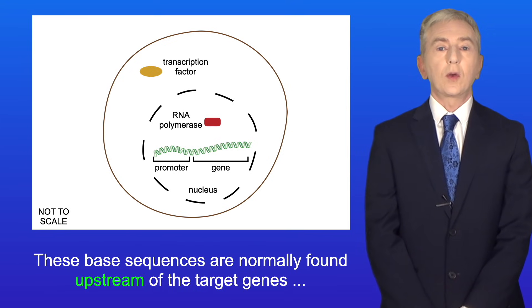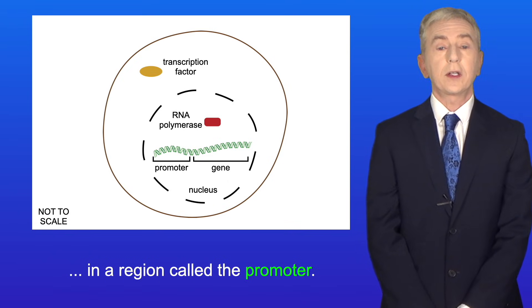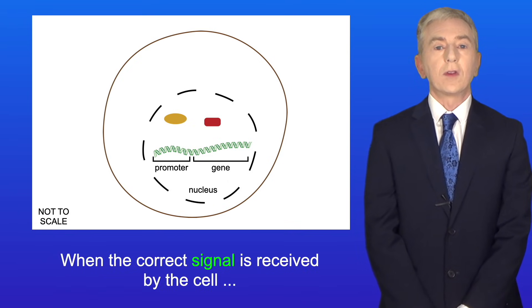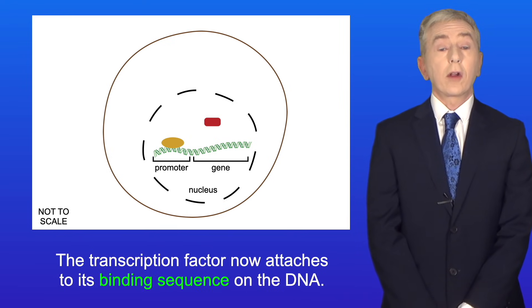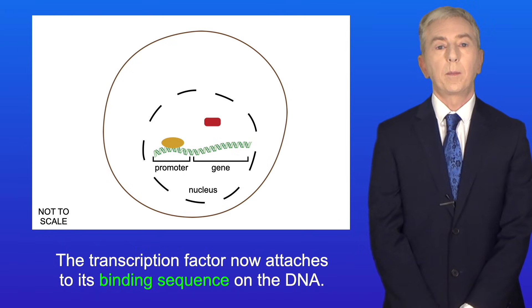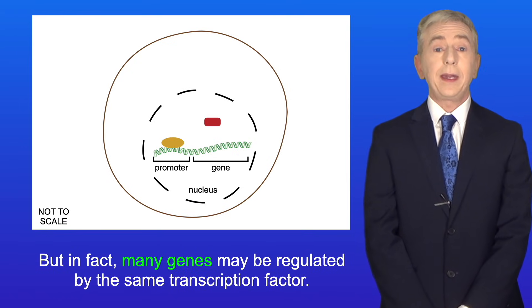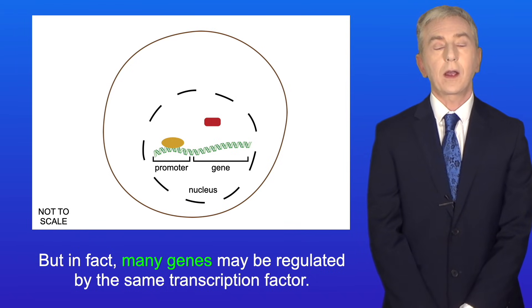These base sequences are normally found upstream of the target genes in a region called the promoter. When the correct signal is received by the cell the transcription factor moves to the nucleus and attaches to its binding sequence on the DNA. In fact many genes may be regulated by the same transcription factor.